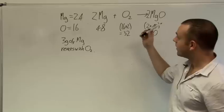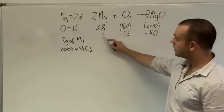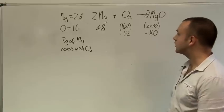Now always the masses on the left hand side should equal the masses on the right hand side. So here 48 plus 32 equals 80 which is what we have on the right hand side.